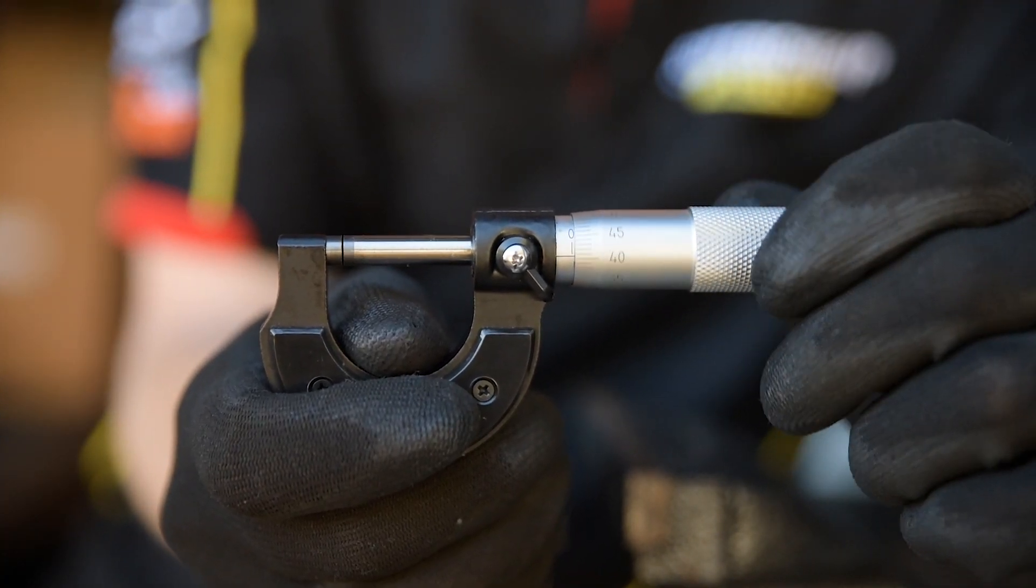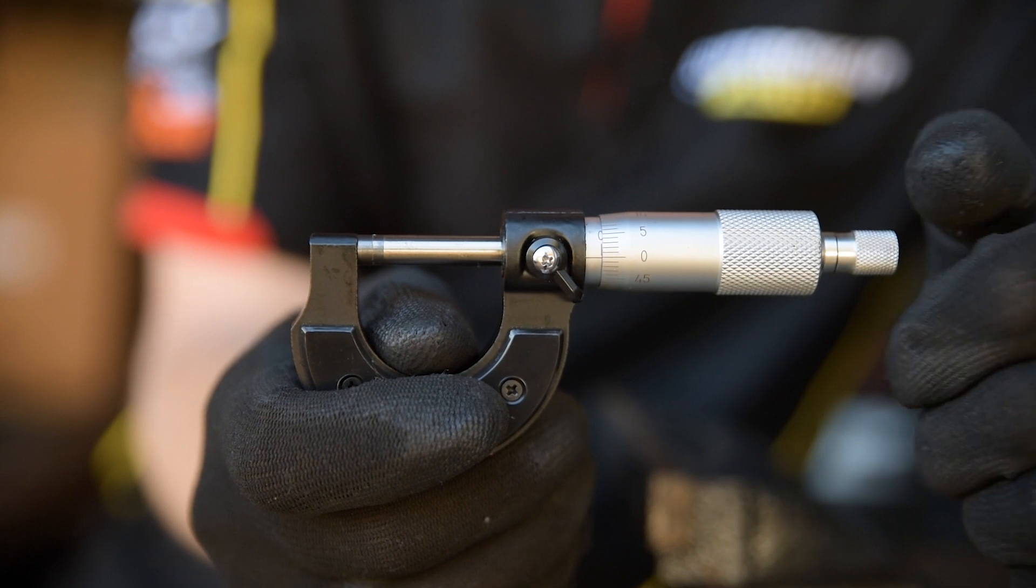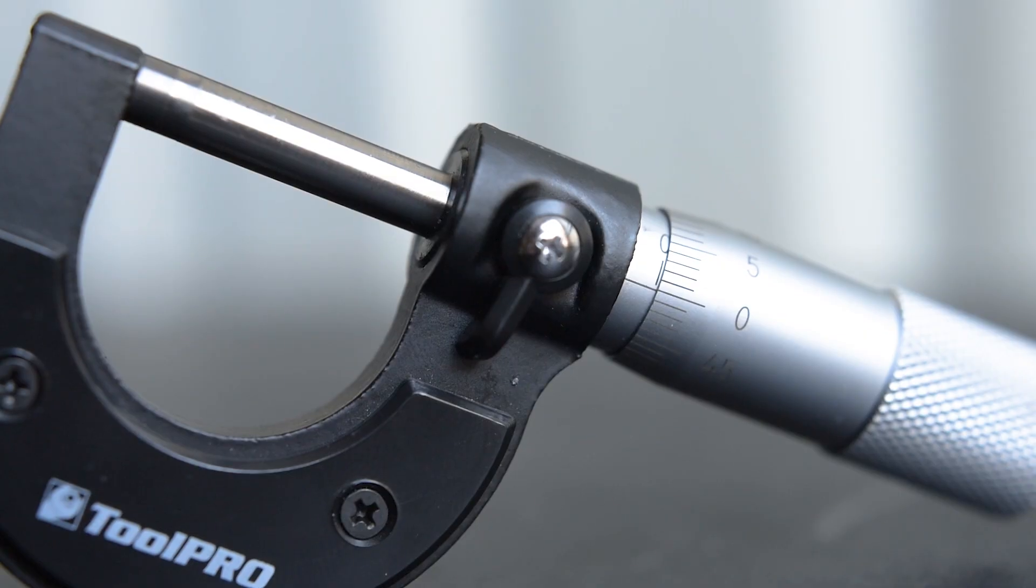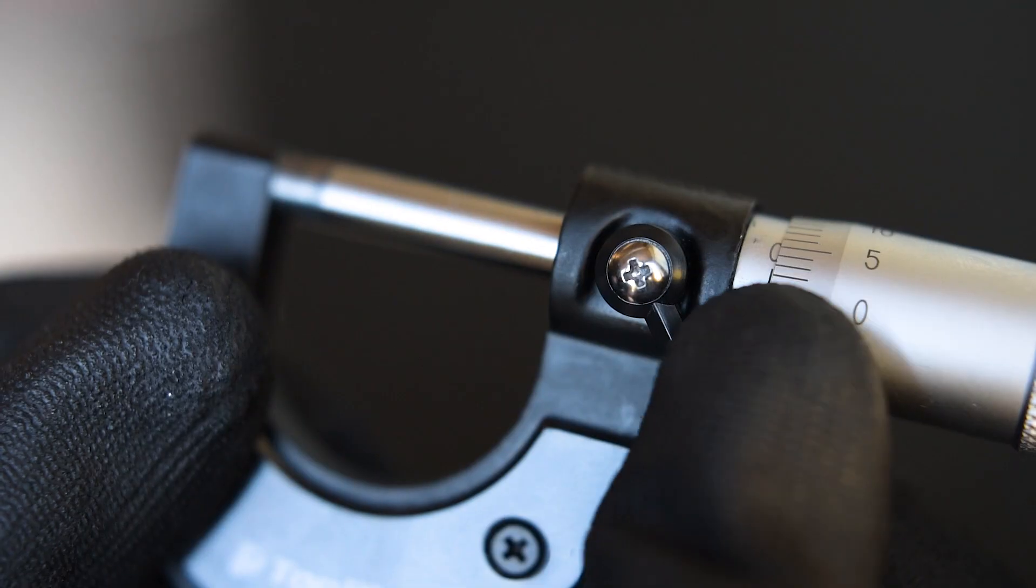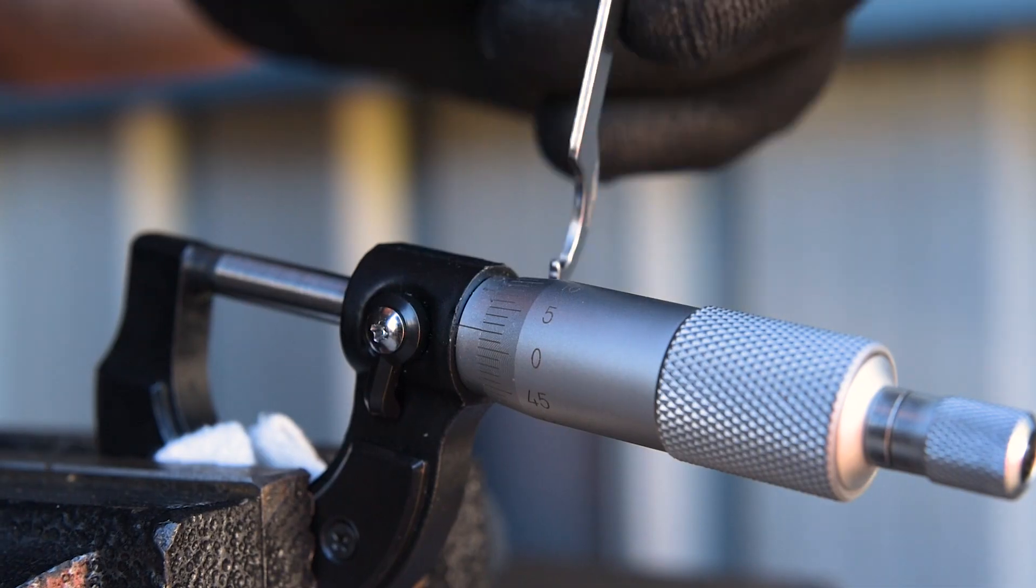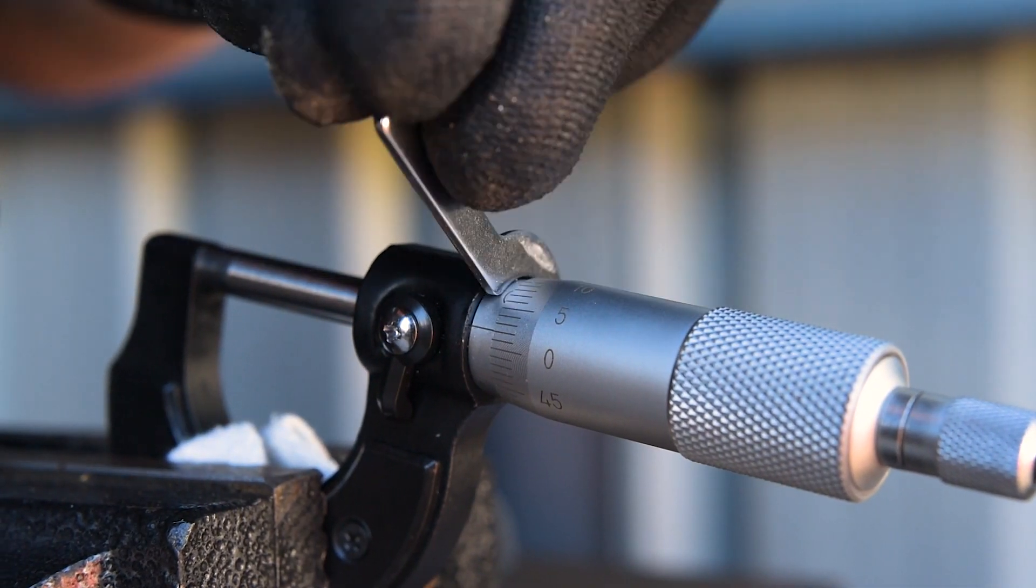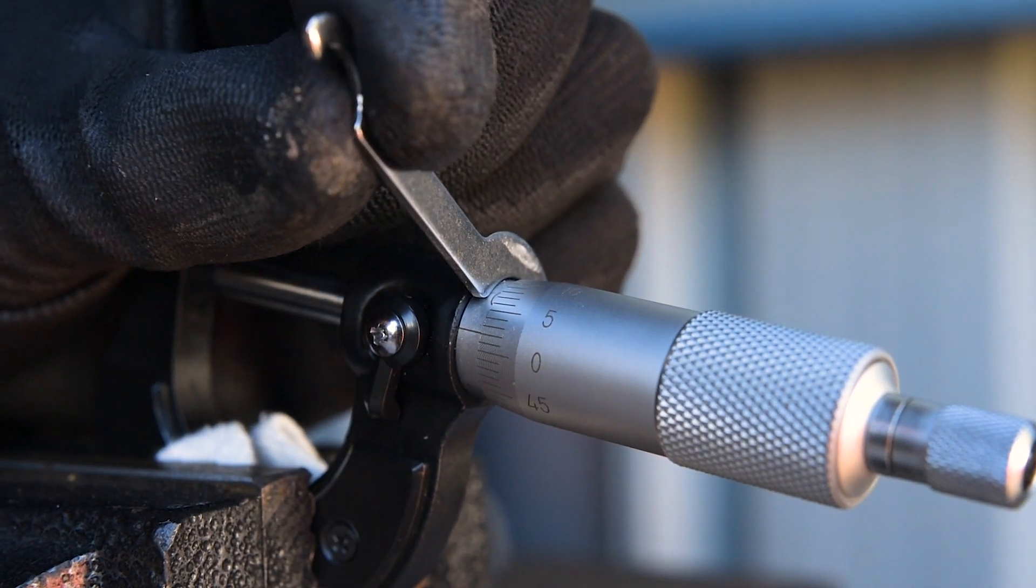Twist the ratchet until the spindle touches the anvil and the ratchet clicks. The micrometer should measure zero here. If not, lock the spindle firmly in place and use the included wrench to rotate the sleeve until the zero lines up.